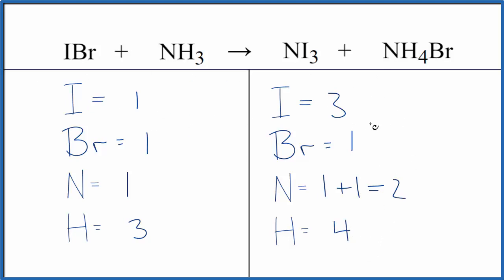I think I want to start with the iodine atoms because I could put a three here. One times three, that would balance the iodines. But the three goes to everything. So we have three times the one here, that will give us three bromines.